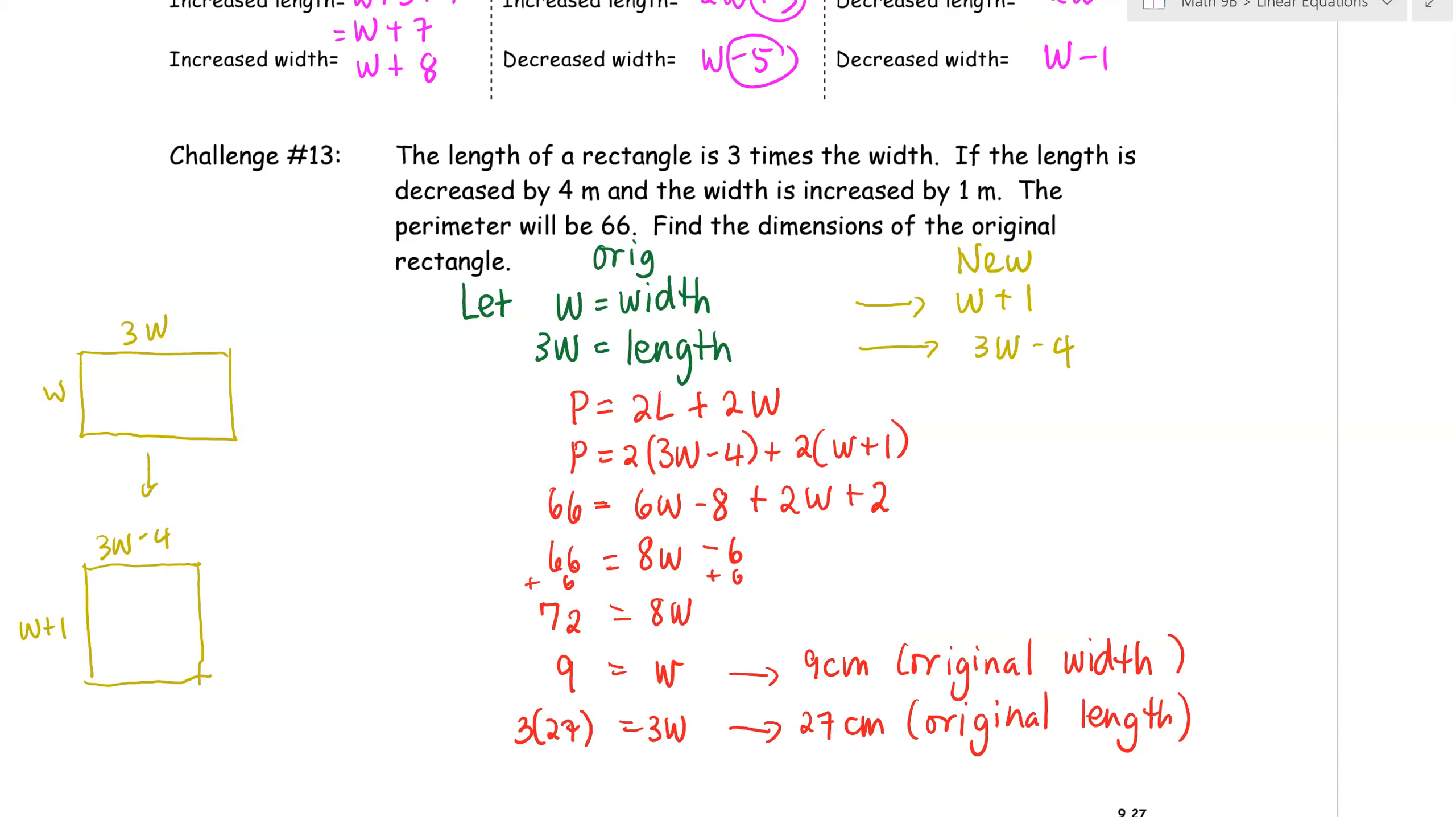All right, thanks for trying it. And here I've drawn some visual of this rectangle here. And it says the length is 3 times the width. So my original figure is this rectangle right here. And then something happened to the length. It was decreased by 4. So that would be 3W minus 4. And the width is increased by 1. So that becomes W plus 1. So in this case here, you can write expressions for the original and the new. And then go from there. So we know that the perimeter is equal to 2 length plus 2 width.